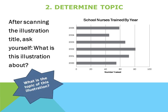Step 2 is to determine the topic. After scanning the illustration title, ask yourself: what is the illustration title? What is the illustration about? If you think about it, this illustration determines the number of school nurses trained within an organization.